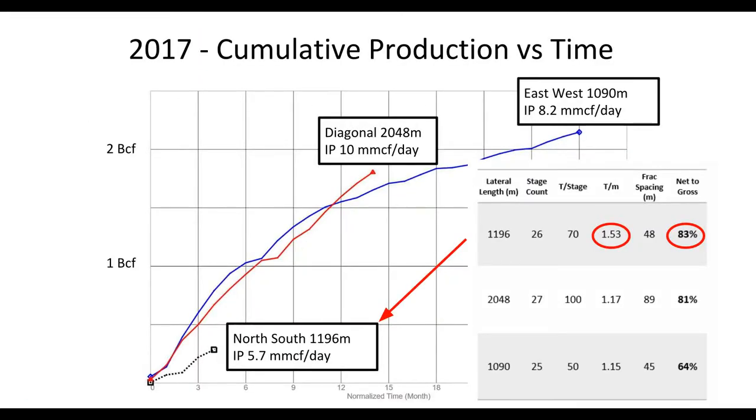This is the cumulative production versus time. On the x-axis, we see normalized time in months. So after 18 months or a year and a half, we're making a little bit shy of 2 BCF. Our initial well, which was the short one, east-west, the type curve is almost identical to the one that's twice as long. And yet, why is that? We never quite figured out. The geology was very similar.